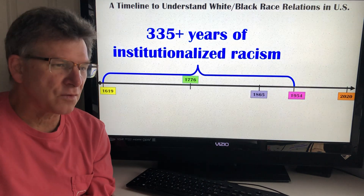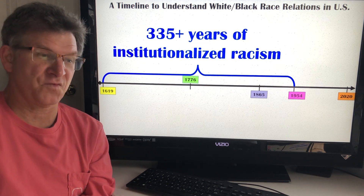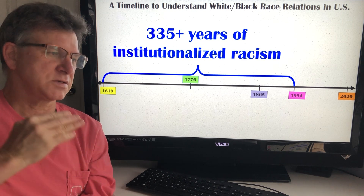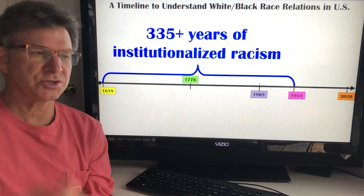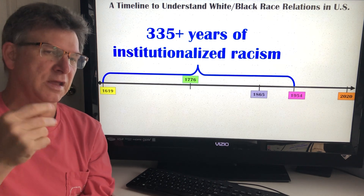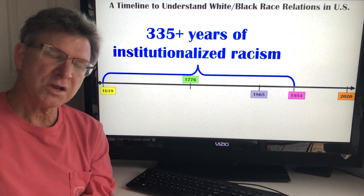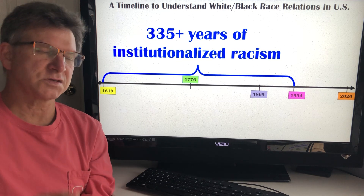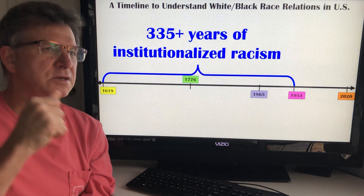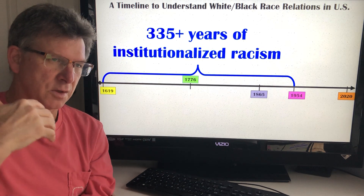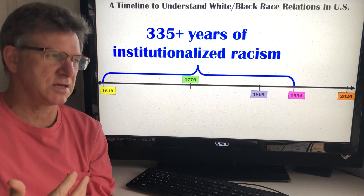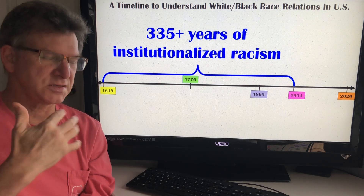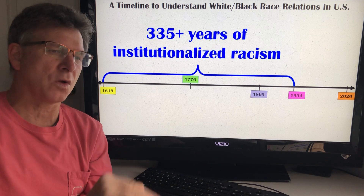What you see over the course of now 335 years is institutionalized racism — government, business, and society in general continuing to promote the idea of blacks being inferior. If you consider each 25 years a generation, you're talking about a dozen generations who were taught that blacks are inferior and whites are superior, an idea of racism prevalent across almost all institutions.